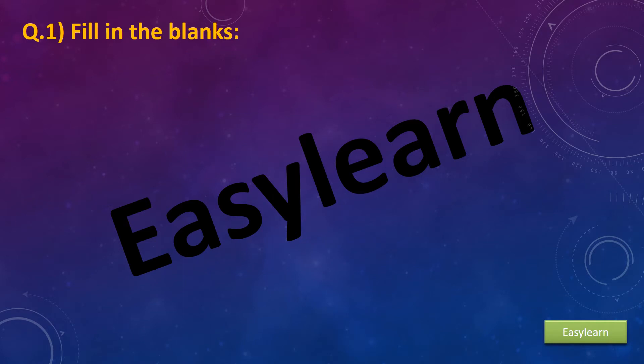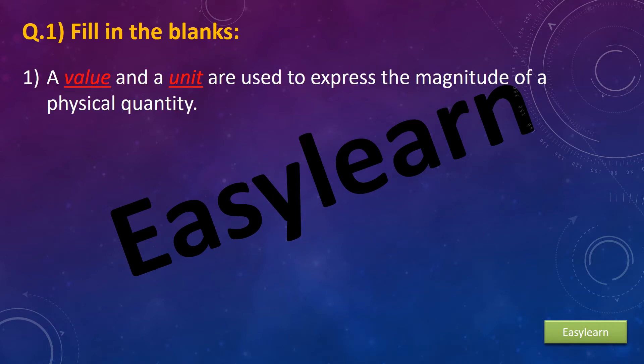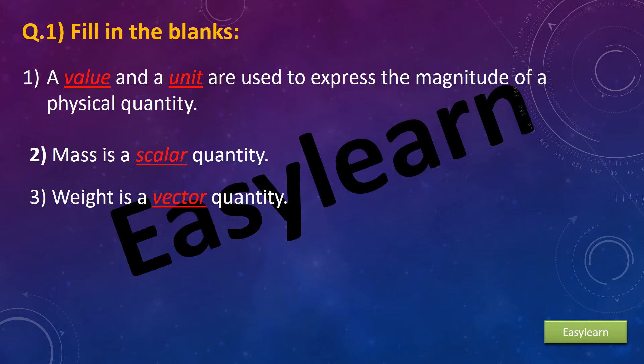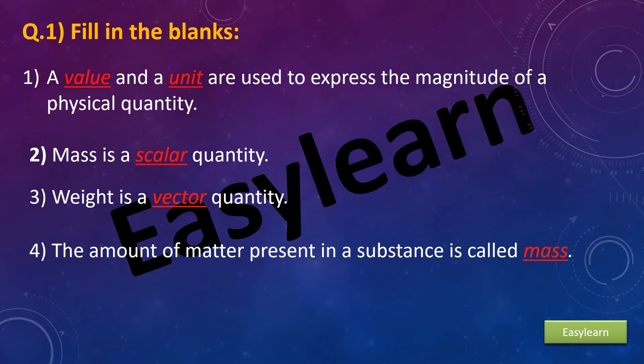Question 1: Fill in the blanks. First, a value and a unit are used to express the magnitude of a physical quantity. Second, mass is a scalar quantity. Third, weight is a vector quantity. Fourth, the amount of matter present in a substance is called mass.